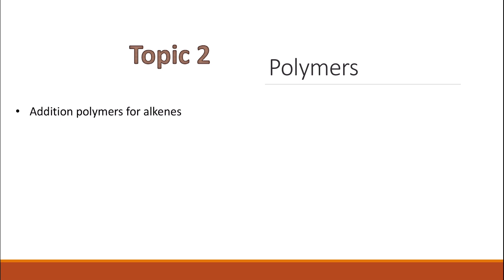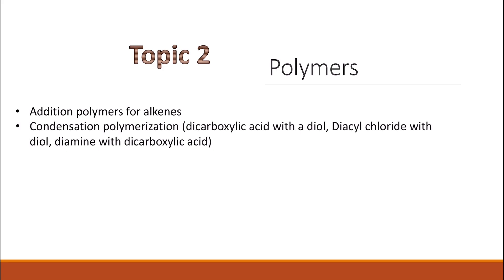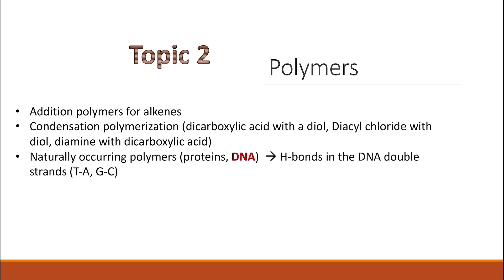For polymers, you need to know addition polymers of alkenes and drawing the repeating unit for a given polyalkene. Condensation polymerization could be either a polyester or polyamide, and it could involve a diacyl chloride or a dicarboxylic acid with either a diol or a diamine. Naturally occurring polymers include proteins and DNA.